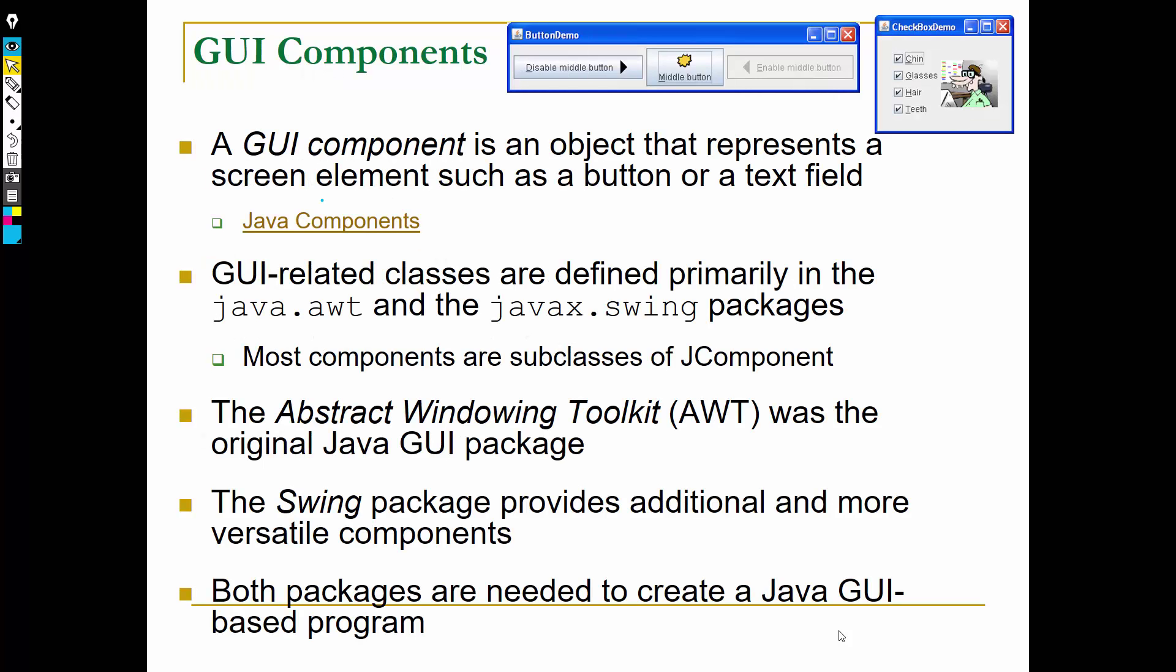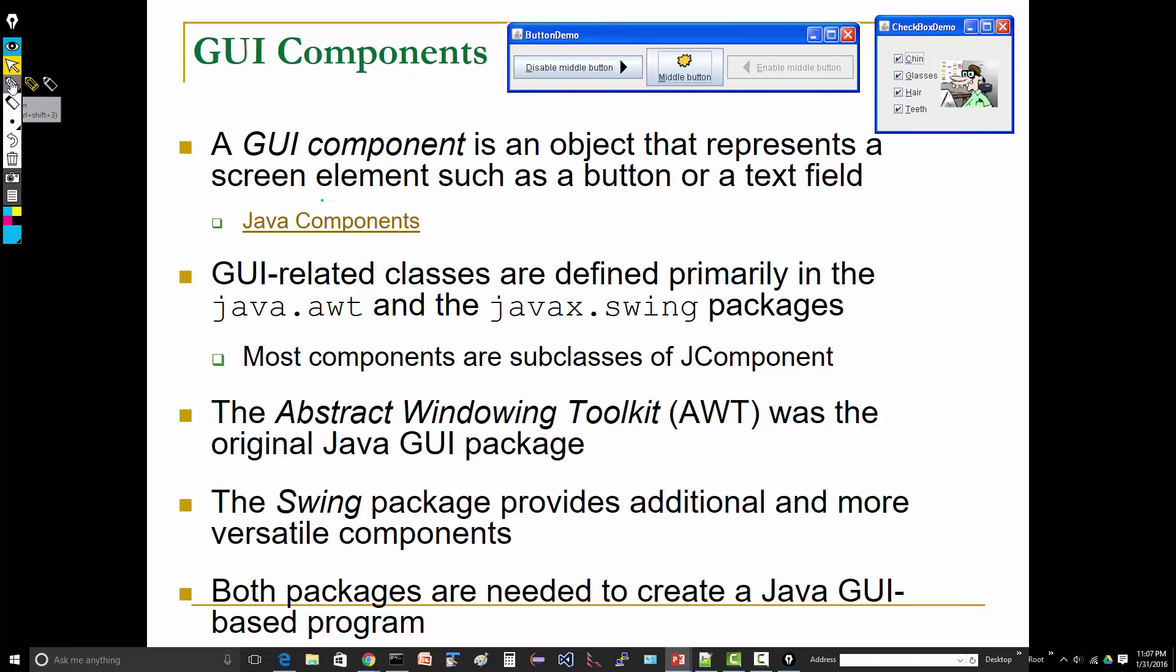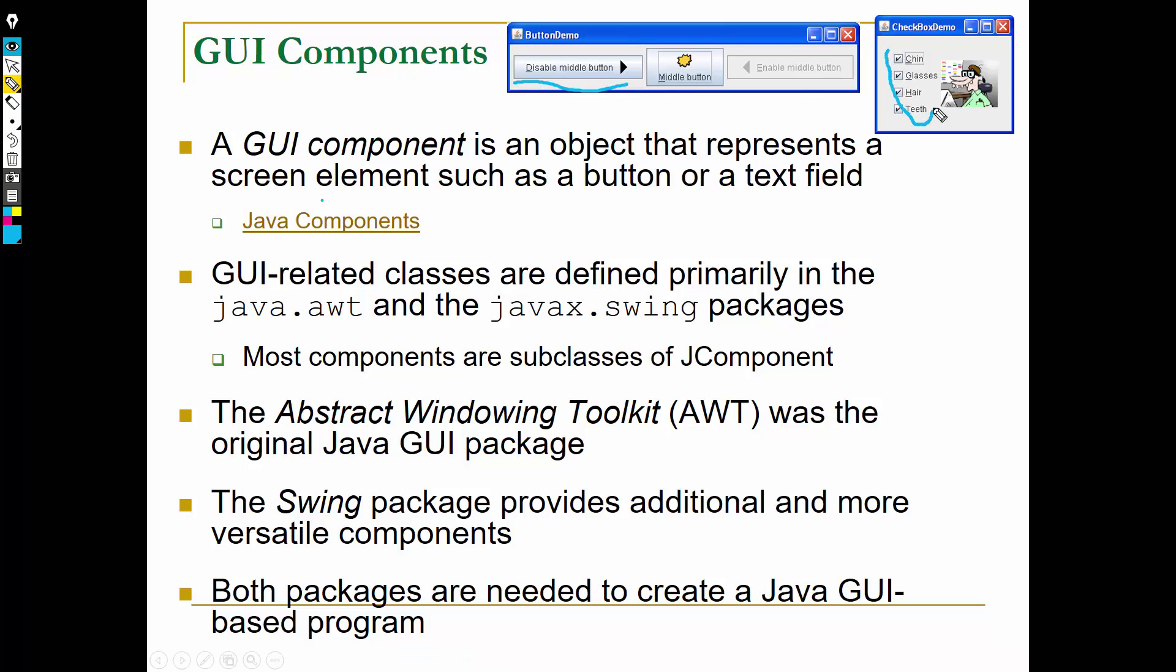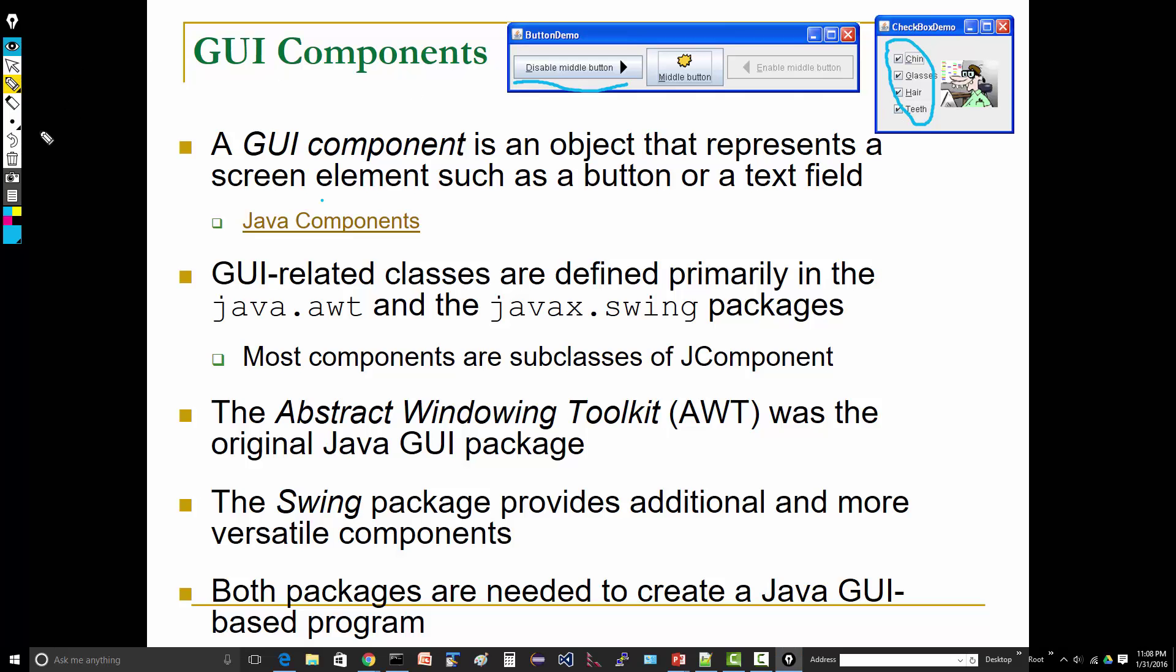So what exactly is a GUI component? You see up here, these are all... here's a button component, here's another button component. So here's three different button components. Those are all GUI components or widgets. Here are checkboxes, checkbox components.